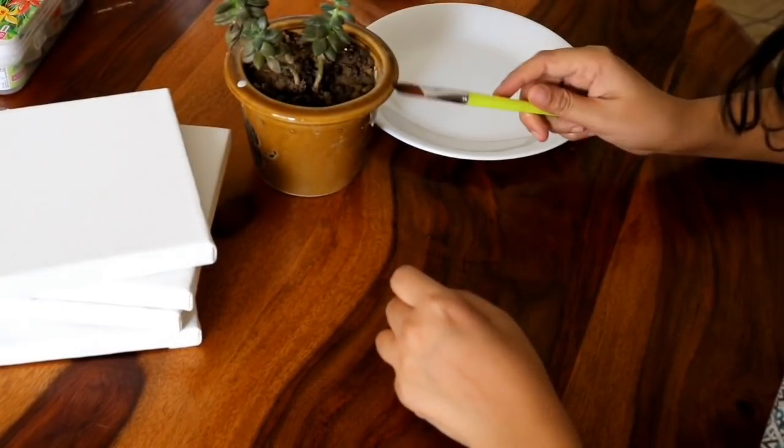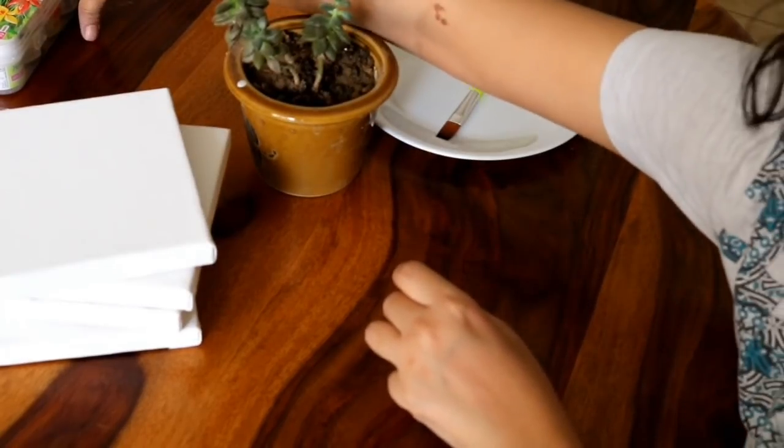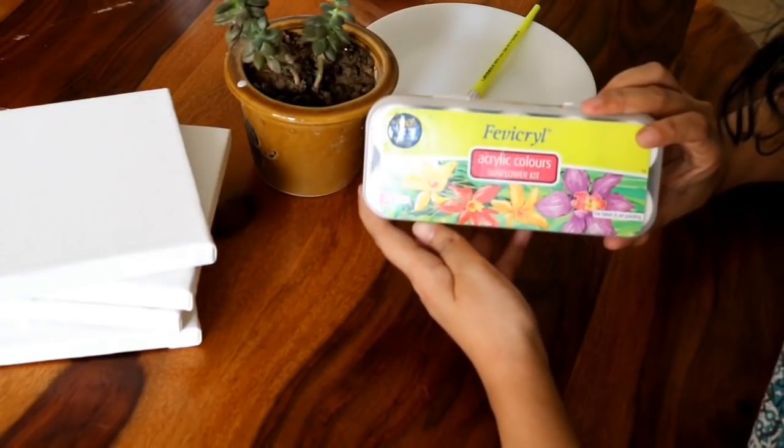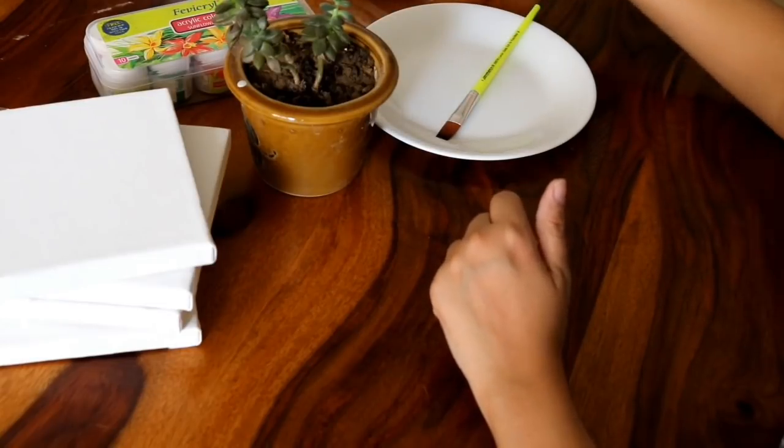Now I will tell you what you need for this DIY project. We will need 4 canvas set. We will need a plate for color mix. We will need acrylic color. We will need paint brush. And we will need 2-3 other small pieces like a knife.